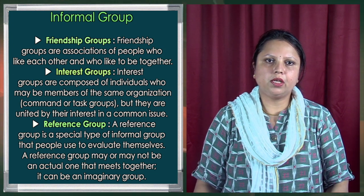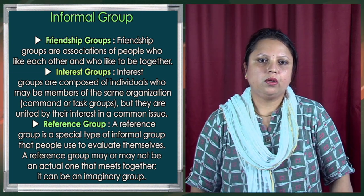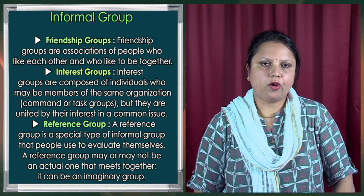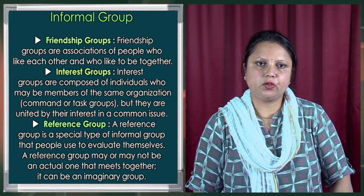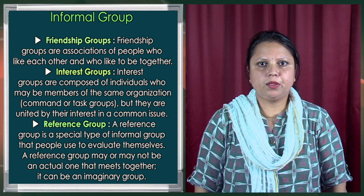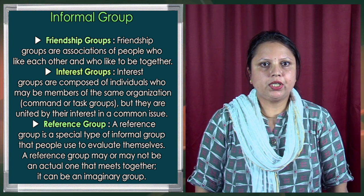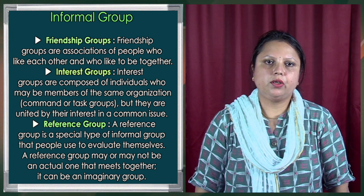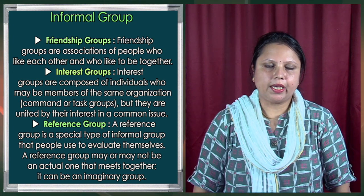Now let us discuss about informal groups. Unlike formal groups, informal groups don't have specific bindings — there are no specific criteria that you need to meet to belong to an informal group, so they are much more informal in nature. There are three types: friendship groups, interest groups, and reference groups. Friendship groups are associations of people who like each other and like to be together, such as neighborhood groups, peer groups, or school friends.